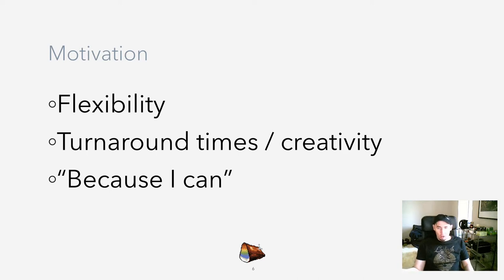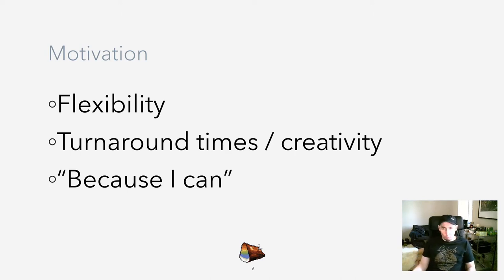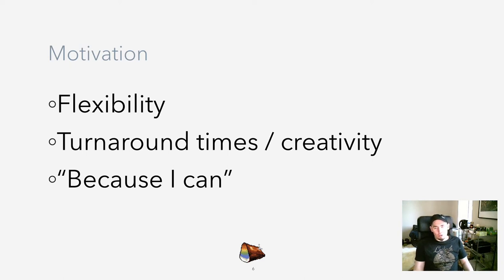When we found that a specific entity needed some new kind of functionality or some new property, the only way to implement that was to save the project, go out of the demo tool, open Visual Studio, add the new functionality, compile everything, reload the project in the demo tool, wait for everything to be loaded, and find out whether the functionality actually works. That means we had pretty bad turnaround times, and when you have bad turnaround times, you cannot be as creative as you might want to be, because you're spending so much time just waiting and not working on your actual content.